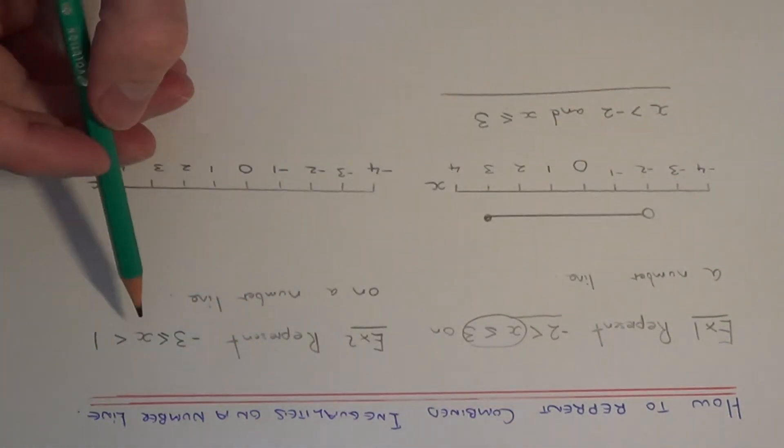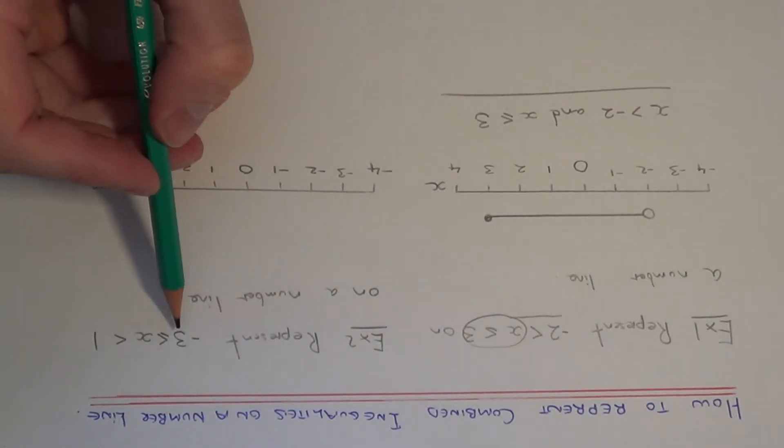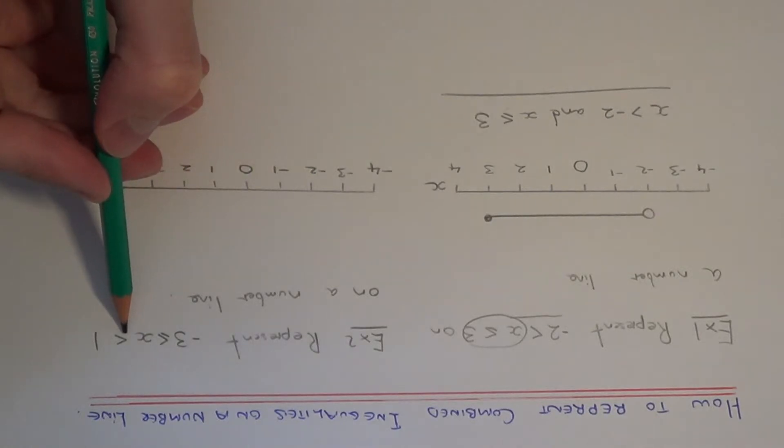Let's have a look at example 2. This time we need to represent minus 3 is less than or equal to x which is less than 1 on a number line.